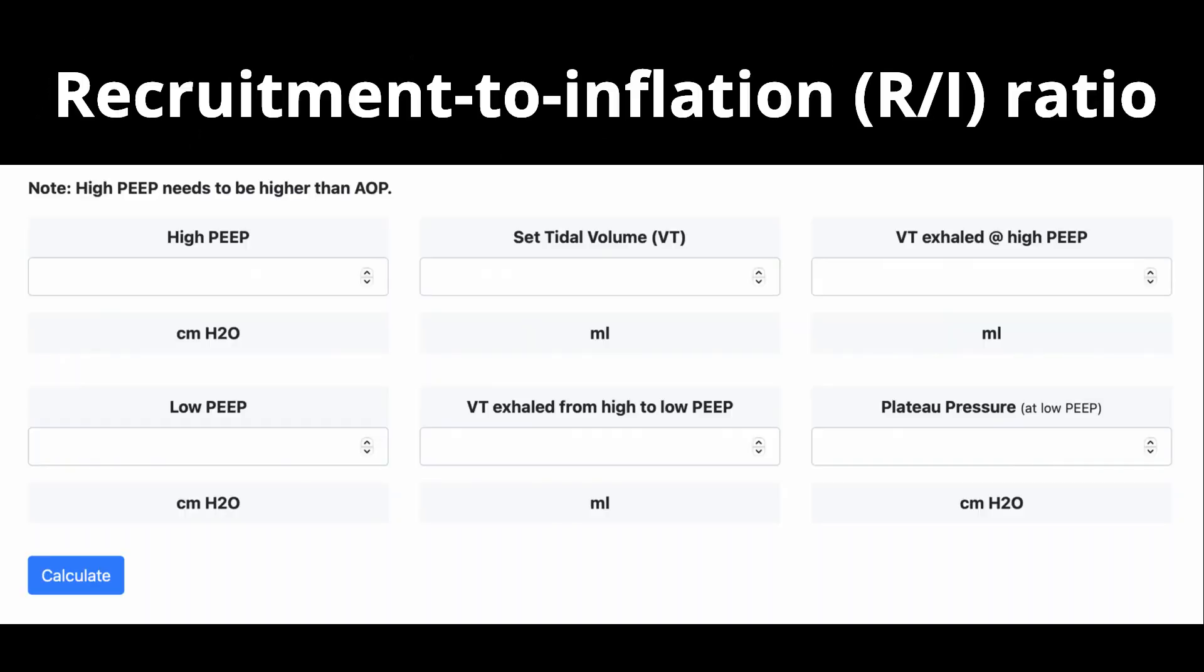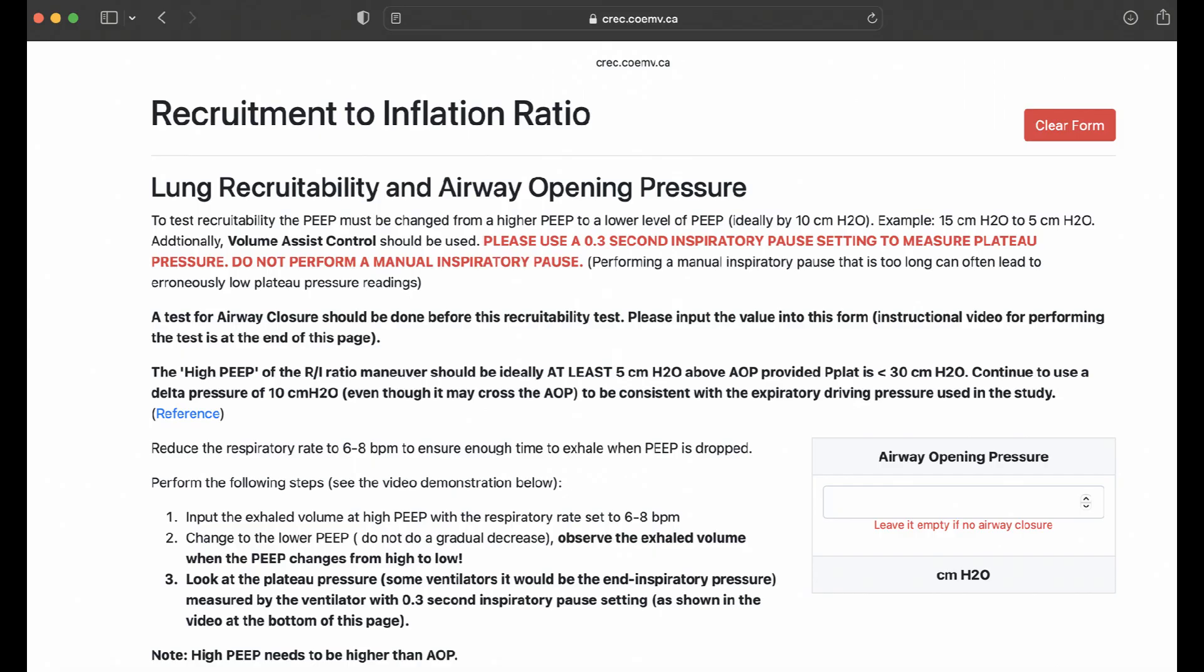The last method is recruitment to inflation ratio. The R-I ratio is obtained with a simplified single breath maneuver that can be performed with any mechanical ventilator. For simplification go to this website and enter the values. Can be easily done at bedside.